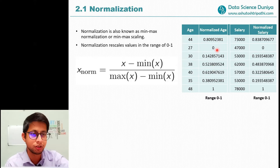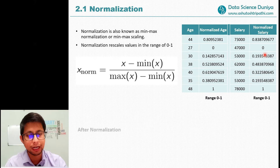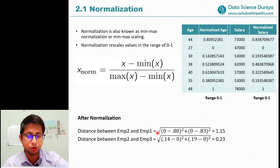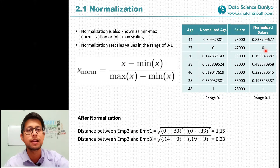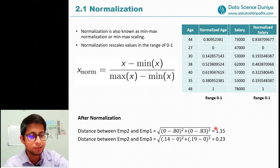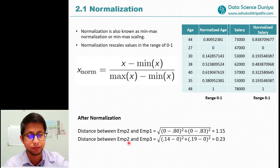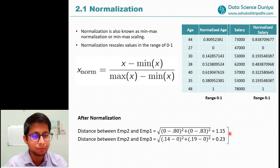Similarly, we can scale the salary column the same way — all values will fall within the range of 0 to 1. Now let's again calculate distances after normalization. After normalization, it doesn't matter whether salary values are in millions or thousands — they all fall between 0 and 1. The Euclidean distance outcome is now much more significant than before normalization, giving a value of 1.15 for employee two and employee one.